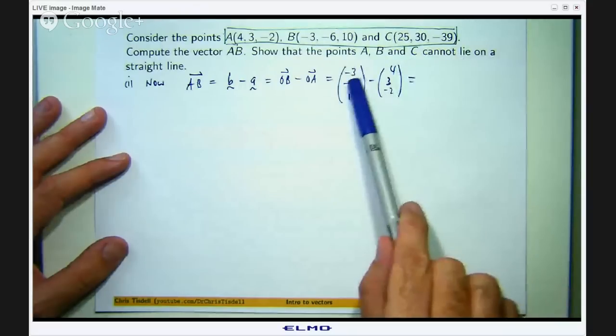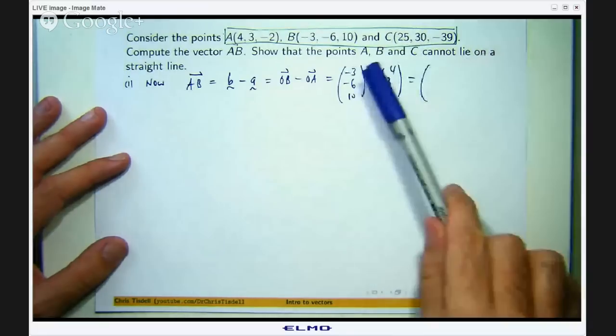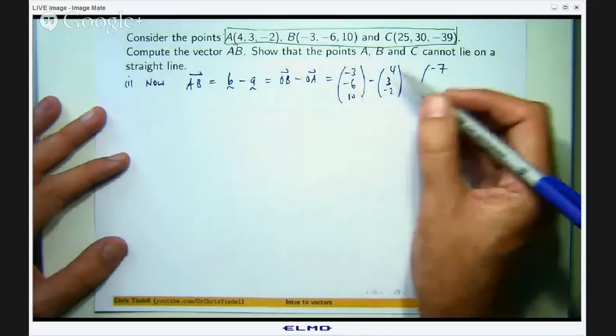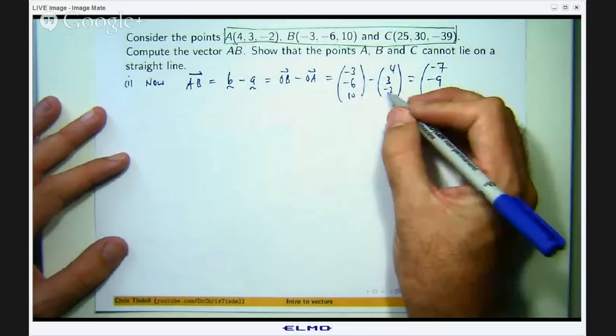So you are just working the first component with the first component, second component with the second component. So we get negative 7, negative 9, and 12. So that is the vector AB.